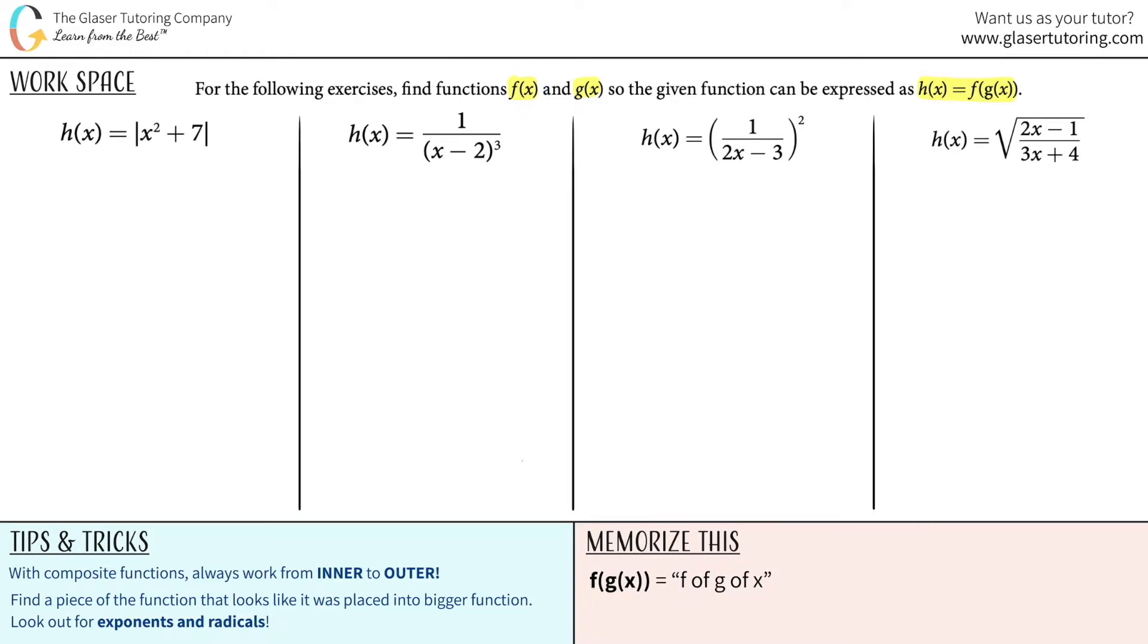The first thing I'm going to do is write down what notation they want. So they want it as h of x equals f of g of x. First thing you've got to figure out is which one is the inner function and which one is the outer function. The inner function is the one that's innermost with the parentheses. In this case, it would be the g of x function.